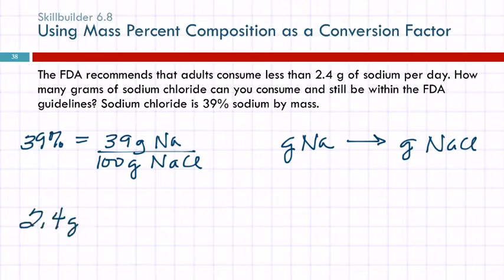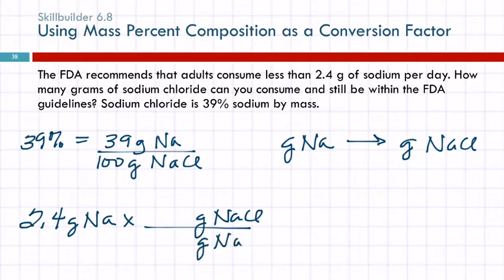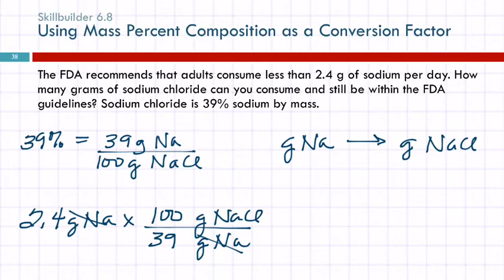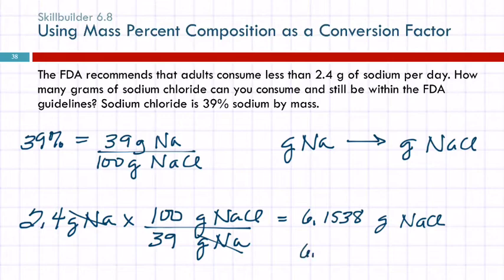Starting with 2.4 grams of sodium, I want grams of sodium chloride on top and grams of sodium on the bottom so that grams of sodium cancel out. From the percentage, 39 grams of sodium goes in the denominator and 100 grams of sodium chloride goes in the numerator. So: 2.4 times 100 divided by 39 gives 6.1538... grams of sodium chloride. With 2 significant figures, that rounds to 6.2 grams.